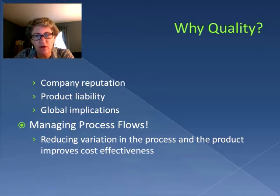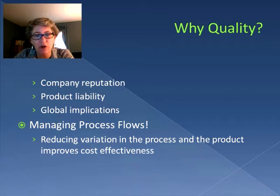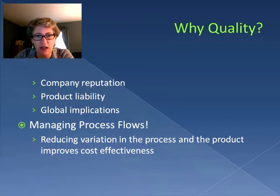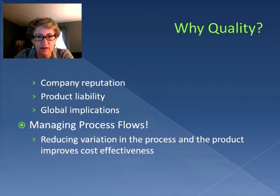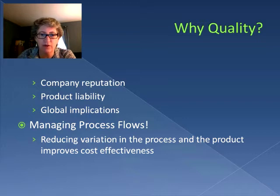So what we want to do in terms of quality is manage the process flows. By reducing variation in the process and in the product itself, it improves cost effectiveness. If you recall, the more variation we had in terms of lead times and demand, we had to keep safety stock. When there was variation in a process flow, we had increases in lines and inventory that caused all sorts of problems. So if we can reduce variation in the process, we will improve our cost effectiveness.